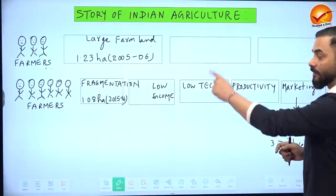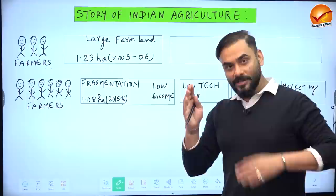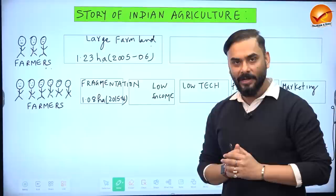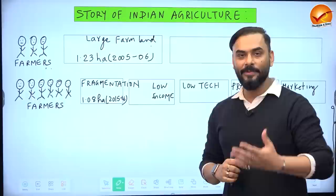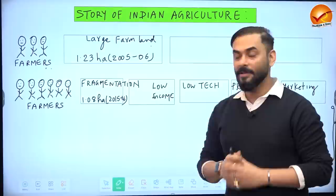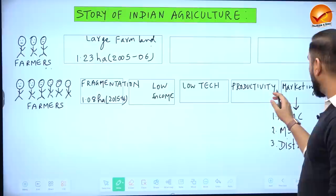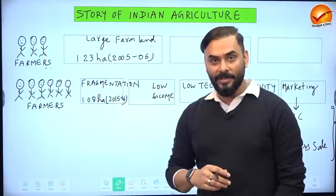Because of land fragmentation, disguised unemployment emerged — a small piece of land has 20 people working on it when only one person is needed. The result is stagnancy in income for the farming community. Productivity of the land also becomes stagnant, because on a small piece of land you cannot use large-scale technology. So low income, low technology, and low productivity reinforce each other.